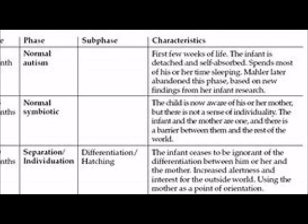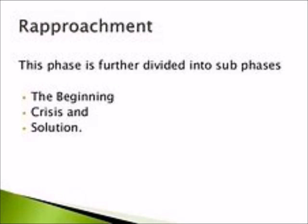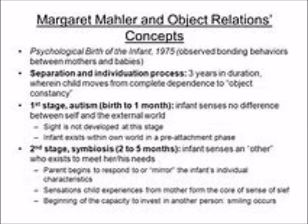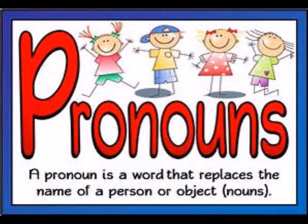The second sub-phase, practicing, spans ten to fifteen months. This is broken down further into two more sub-phases: early and proper. Here the baby uses mother as a stable base, as a sort of refueling station. Now, being able to walk and with burgeoning cognitive abilities, the baby begins a love affair with the world. Emphasis is on practicing skills and autonomy, seemingly oblivious to the mother. With the ability to move around freely, there is a giant step towards identity formation.